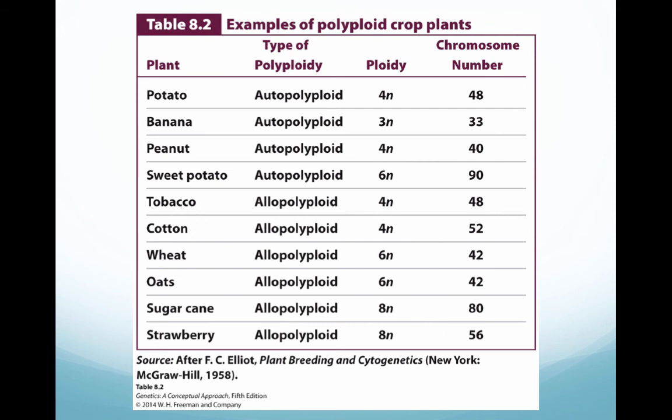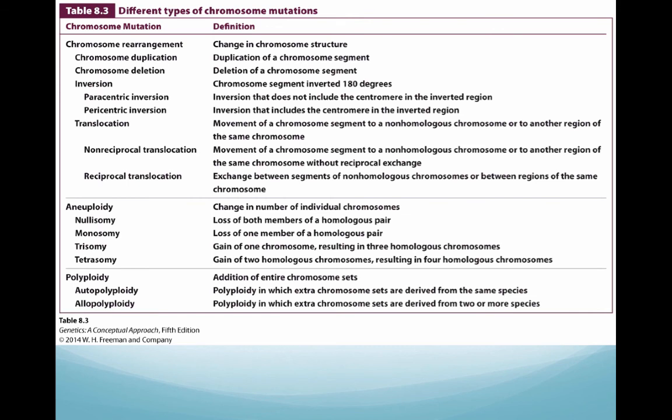Here are some examples of polyploid crop plants, also covered in your textbook. This brings us to the end of chapter eight. We've looked at a lot of chromosome mutations, concentrating on chromosome rearrangements, aneuploidy, and polyploidy. Make sure you have a good handle on these three big categories.